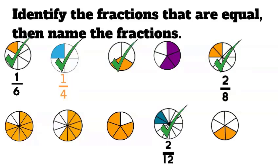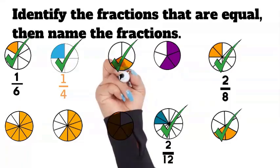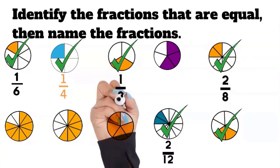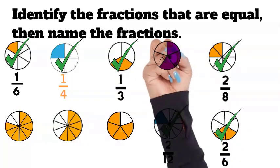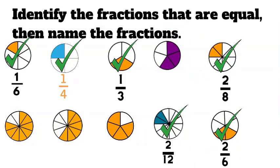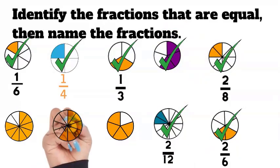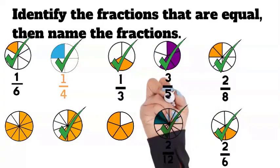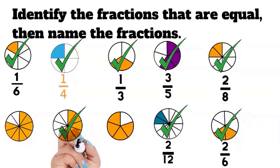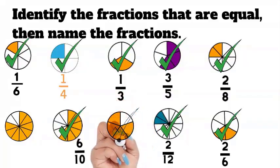We're moving right along — the third one. The third one matches the one at the bottom right. So we've got one third, which is equal to two sixths. You're getting it. Let's keep going. So this amount matches the amount shaded here. This amount is three fifths, and this amount is six tenths. So three fifths is equal to six tenths.